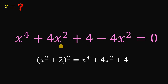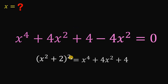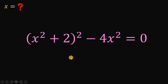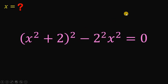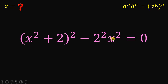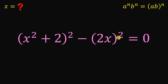Now, take note that x to the fourth power plus 4x squared plus 4 is (x squared plus 2) quantity squared. So we can replace that expression with (x squared plus 2) squared. Also note that this 4 is 2 squared. Using the identity a raised to n times b raised to n equals (ab) raised to the power of n — since we have the same exponent, we can multiply their bases — so 2 squared times x squared can be written as (2x) raised to the power of 2.